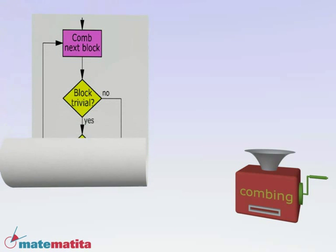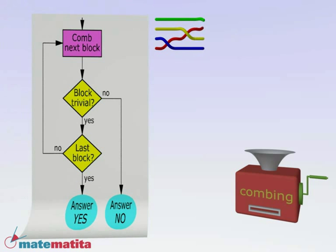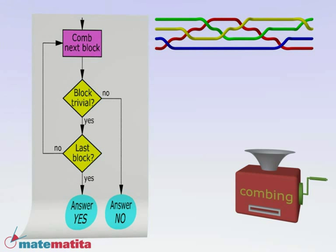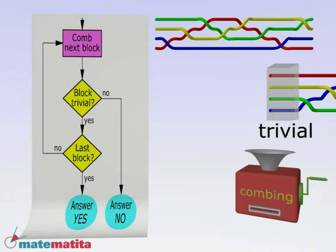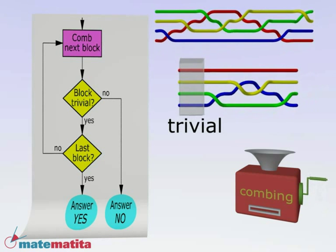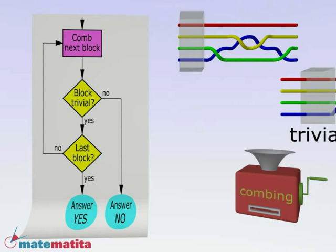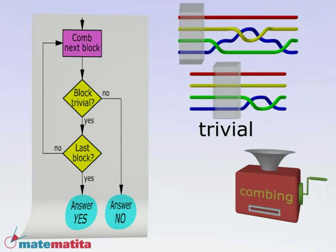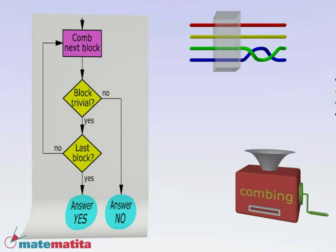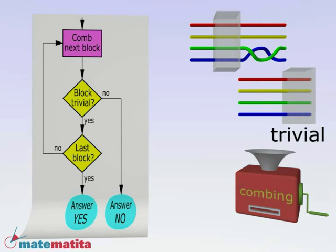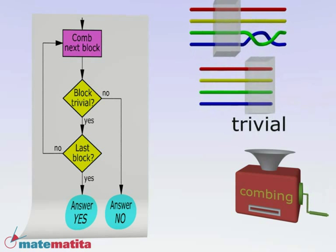We start with a pure braid. Comb it into blocks. If one of the blocks is not trivial, terminate answering no. Otherwise continue with the next block. If all the blocks are trivial we get the trivial braid and the answer is yes. The input word is equivalent to identity.